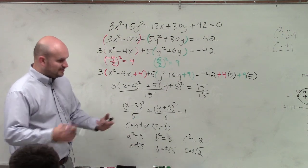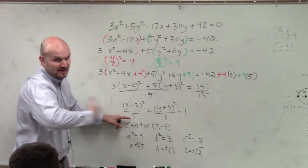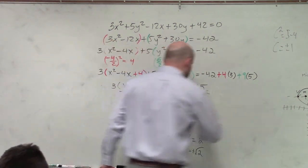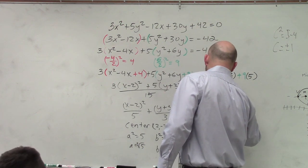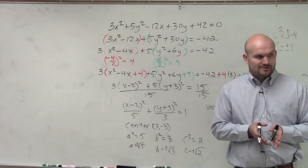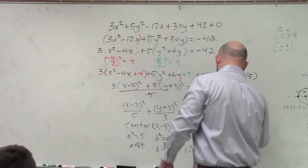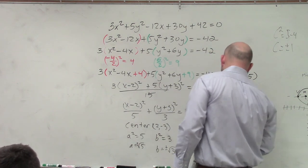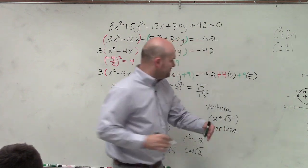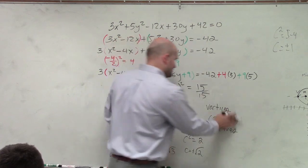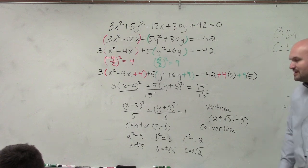So now, we still need to figure out what the foci, the vertices, and so forth. Since my a² is under my x, that means I'm going left or right. So to find my vertices, if I'm going left or right, should I add my vertices to the x-coordinate or to the y-coordinate? x-coordinate. So 2 plus or minus my a, which is the square root of 5. 2 plus or minus the square root of 5, -3.